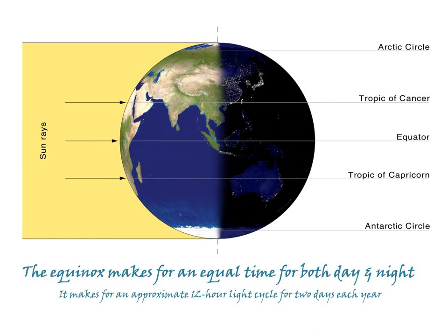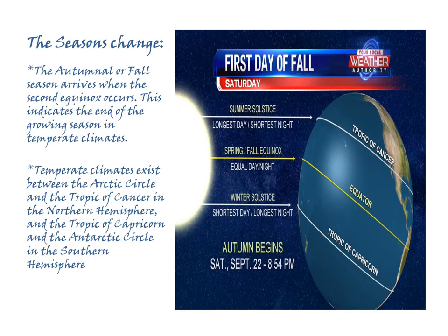The oblique or indirect rays often define the extremes, either of winter or of summer. Because of the rays affecting the earth in such a manner, it makes for an approximate 12-hour light cycle for two days each year. We say approximate because in different parts of the planet, things will look differently. The seasons change — this is the fall equinox, or autumnal equinox, the first day of fall or autumn.